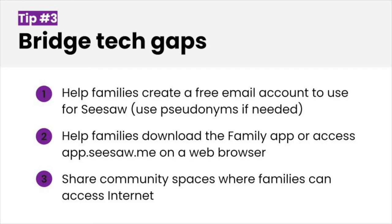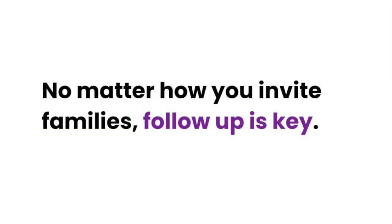Our third tip is to help families who don't have access to an email address or technology. Some families may not feel comfortable using an email address with their real names. Right now families do need an email address to create a Family App account — you can help them create a free email address and use pseudonyms if needed. Some families don't have access to a smartphone or reliable internet. Note that Seesaw works on many different devices. If families' devices don't support the Family App, they can visit app.seesaw.me on any web browser. If families don't have reliable internet, help them find community spaces where they can check Seesaw from time to time. No matter how you invite families, follow-up is key. Keep track of who still needs to connect and reach out to see how you can help them get connected.